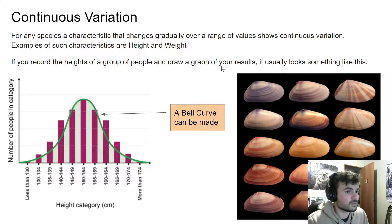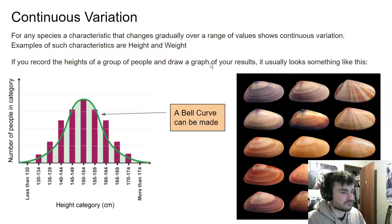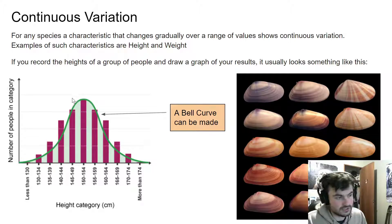So that's height, weight — it could be shell color like this. Anything that changes gradually over a species shows continuous variation.